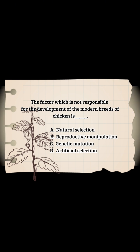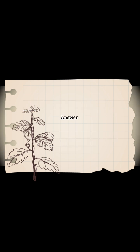The factor which is not responsible for the development of the modern breeds of chicken is: A - natural selection, B - reproductive manipulation, C - genetic mutation, D - artificial selection. Answer: B - reproductive manipulation.